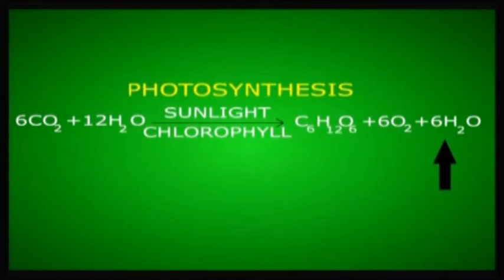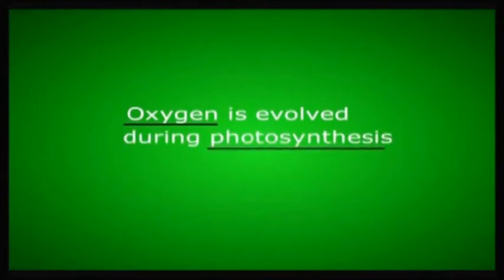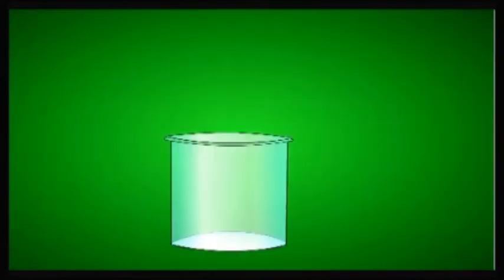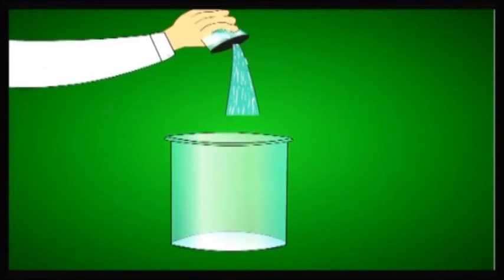Now let us perform a small experiment which shows or proves the evolution of oxygen during photosynthesis. Take a beaker and add water up to three-fourths of the beaker and keep a wide-mouth funnel.